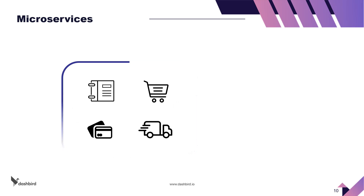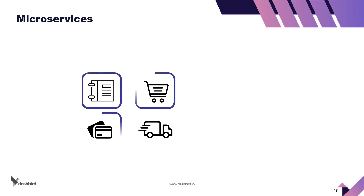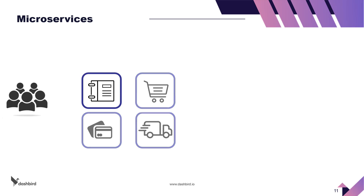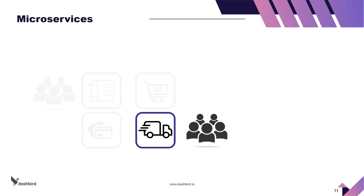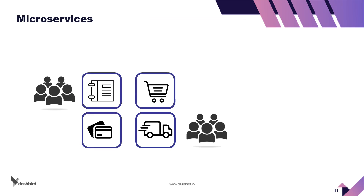A microservices architecture, on the other hand, allows teams to develop, test and deploy services independently. In microservices, teams can work on different services without interfering with each other's work.